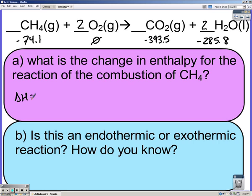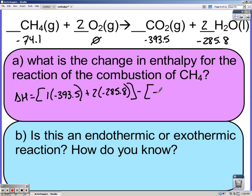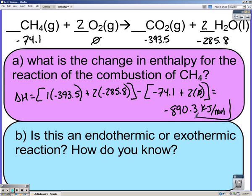Delta H equals products: one CO2 times negative 393.5 plus two waters times the water Delta H, which was negative 285.8, and all of that is minus our reactants. I'm going to add the two times zero, even though technically that's still zero, just so you can see that if it wasn't zero we would have to multiply it. We get negative 890.3 kilojoules per mole. This reaction must be exothermic, and we know that because Delta H is negative.